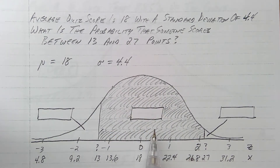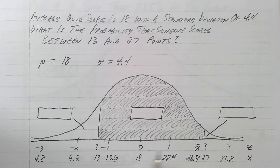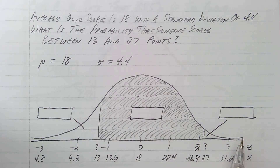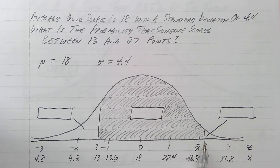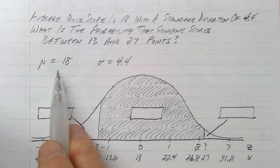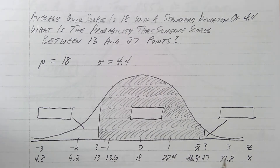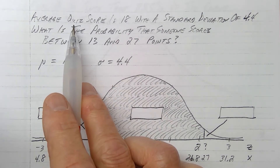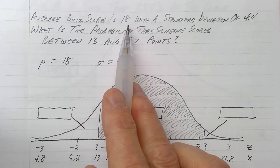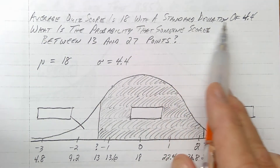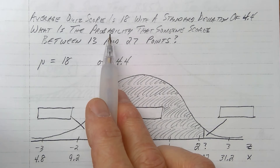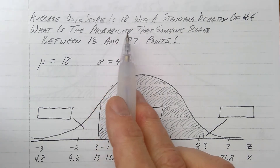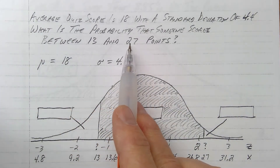Now this one's tricky: area between two unknown Z numbers. I've broken the curve into three pieces — the piece in the middle, the piece on the left, and a little piece on the right. I want the area in between. Using the same mu and standard deviation, let's call this a quiz score. I had 100 students walk in, gave them a quiz, and the average score was 18, give or take 4.4 — standard deviation 4.4.